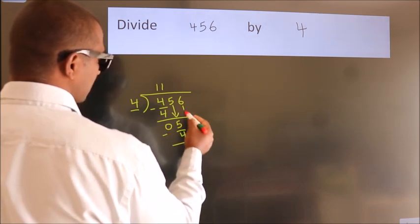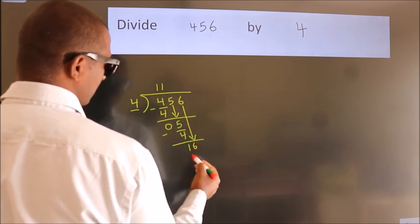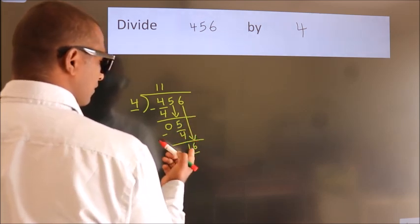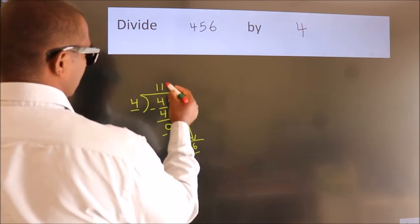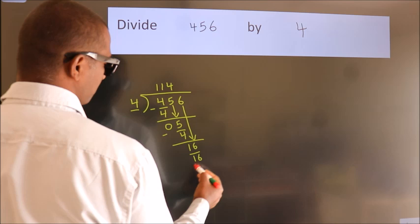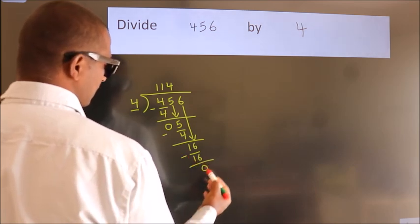After this, bring down the beside number. So 6 down. So 16. When do we get 16? In 4 table. 4 fours 16. Now we subtract. We get 0.